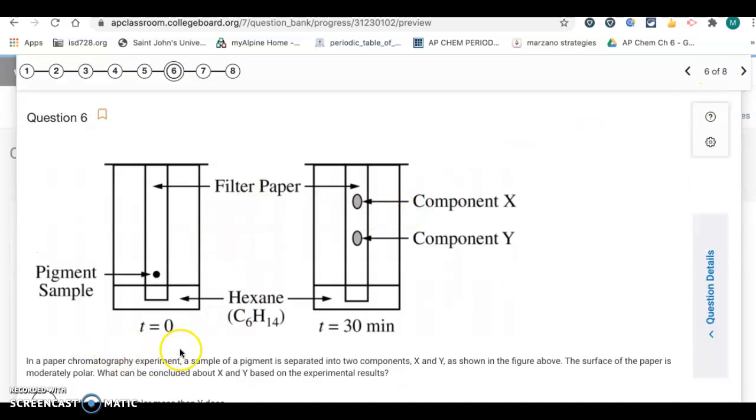In a paper chromatography experiment, a sample of a pigment is separated into two compounds. X and Y is shown in the figure above. The surface of the paper is moderately polar. What can be concluded about X and Y based on the experimental results? Okay, so, with chromatography, you separate components based on polarity. So, in this case, we have, there's always the two phases. There's the stationary phase and the mobile phase. In this case, the stationary phase is the paper. And it says the paper is moderately polar. The mobile phase is the solution. And in this case, it says it's hexane, C6H14.